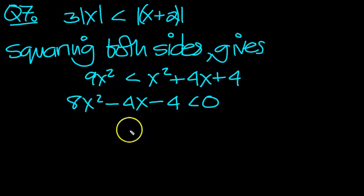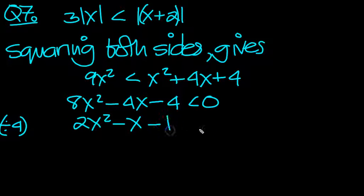There's a 4 common here, so divide by 4 all the way through, and we get 2x squared minus x minus 1 is less than 0.